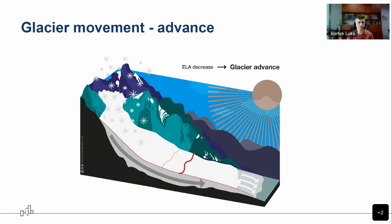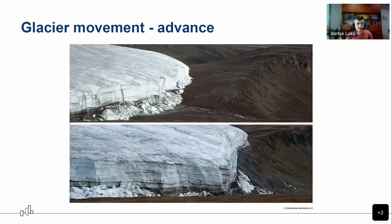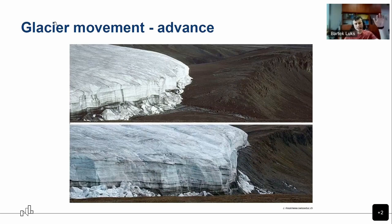These two processes are responsible for glacier movement. When there's a lot of mass in the upper part, the equilibrium line goes down and the glacier advances. For example, one tongue of the Vatnajökull glacier in Iceland advanced about 200 meters in just two years — a really fast advance — mostly due to glacial plasticity and some sliding, with the ice mass from the upper part pushing the lower parts forward.